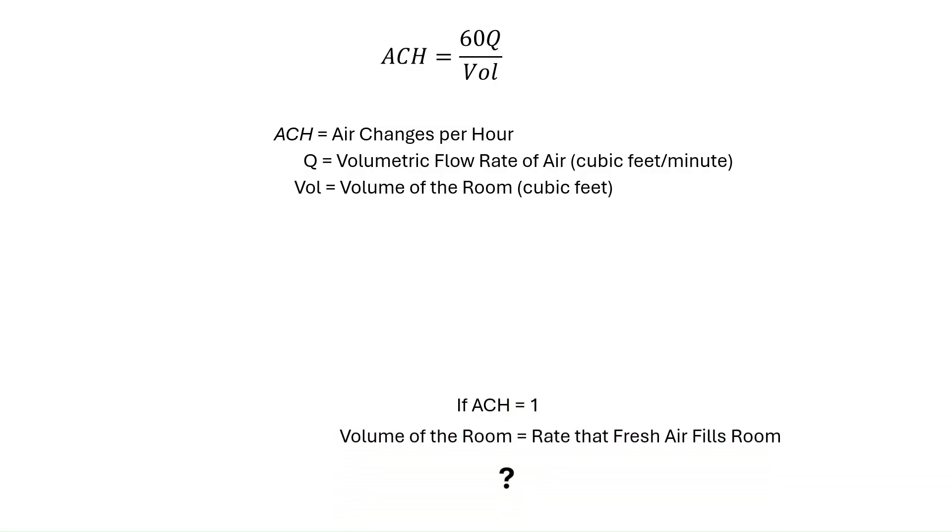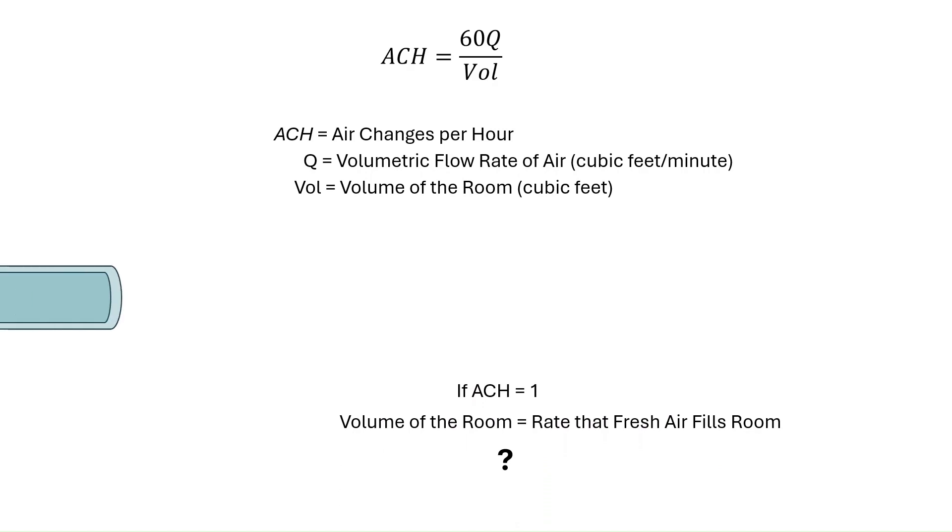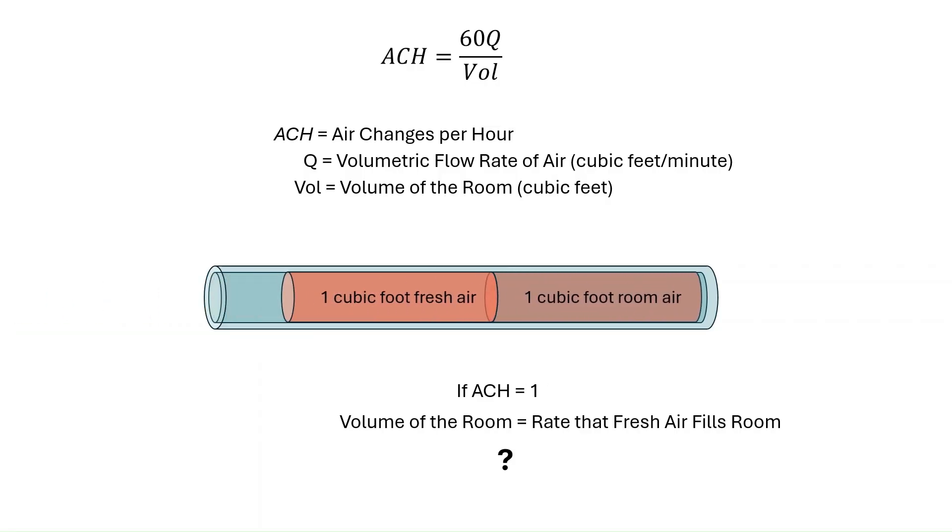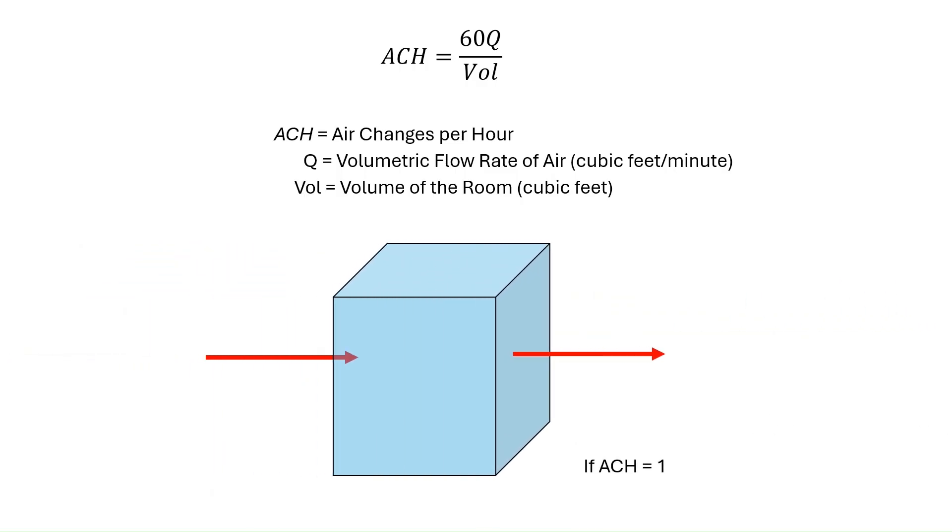Now, you would think that an ACH of 1 would mean that 100% of the air in the room would be replaced every hour. If the room was a pipe, this would be true. Every cubic foot of room air would be replaced by 1 cubic foot of fresh air added. However, for a room, this is just not the case. This is because the fresh air that's added to the room is mixed with the air already in the room, and thus only a fraction of the air is removed. As a result, an ACH of 1 actually means only about 63% of the air is removed per hour.